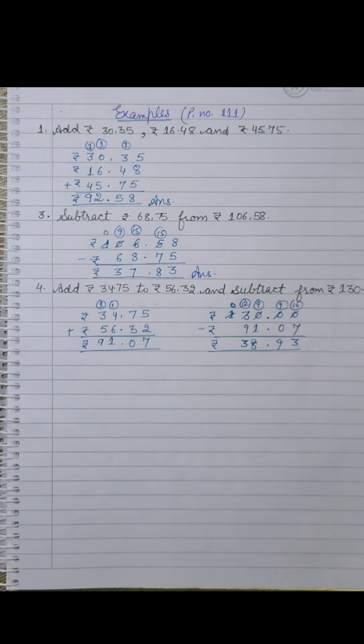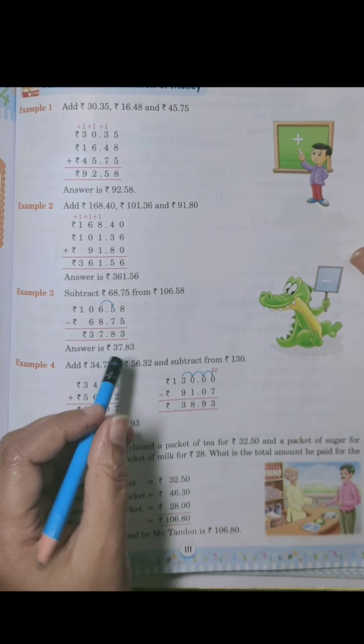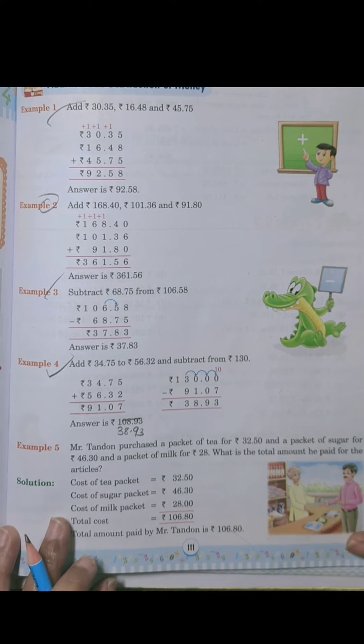I am going to show you. You can cut this term and write 38.93, right. Now it's example number fifth.